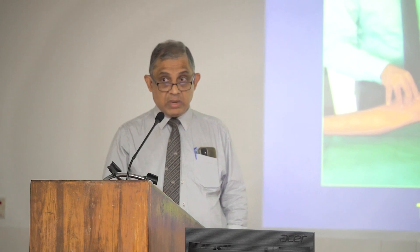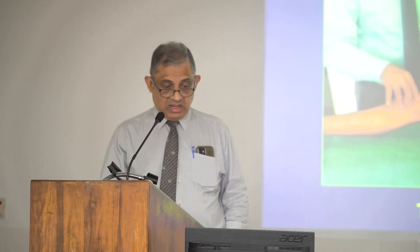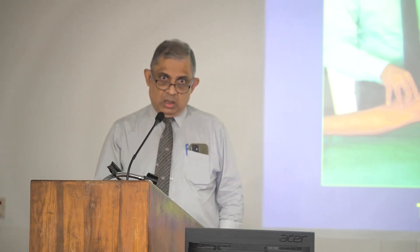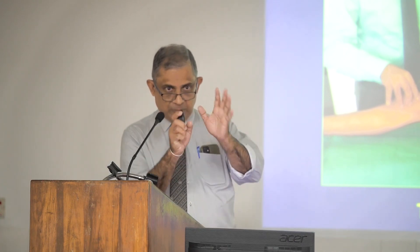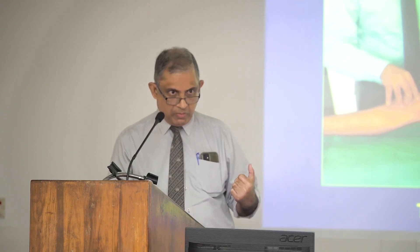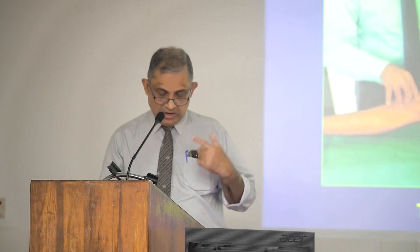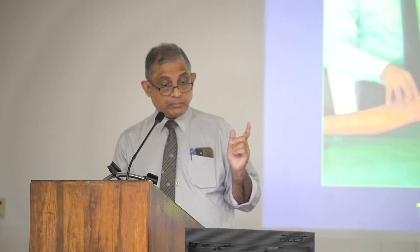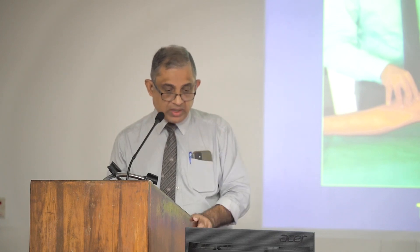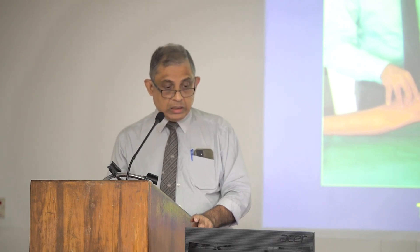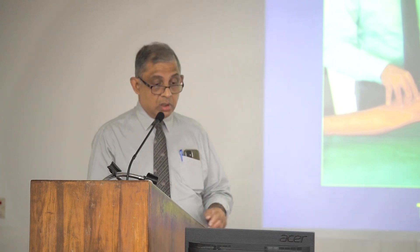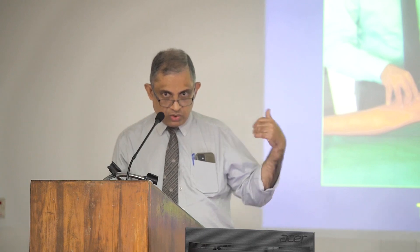Coming back to hips — the main flexor of the hip is the iliopsoas. The test to check whether there is any spasticity or contracture of the iliopsoas muscle is called Thomas's test. You can flex both hips together to eliminate lumbar lordosis, then extend one hip to see whether there is any residual flexor contracture. You flex the assumed normal side to maximum and check whether extending the other hip develops lumbar lordosis.